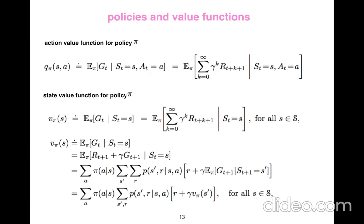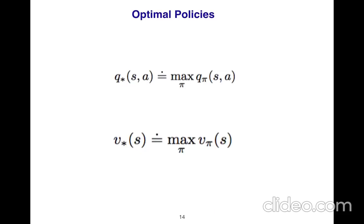So there are some policies and value functions. Policy is pi. So you have two very important variables, action value function and state value function. Our goal is to maximize both of them. Our goal is to maximize them.